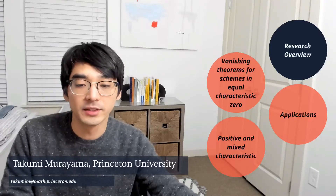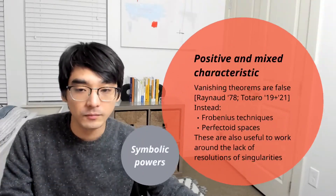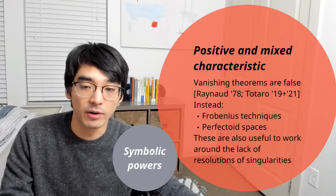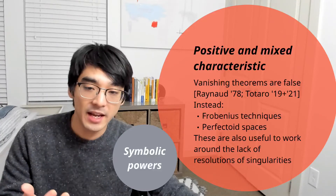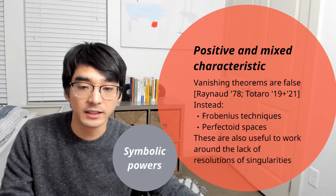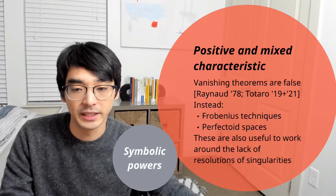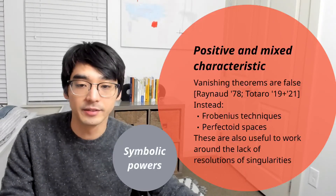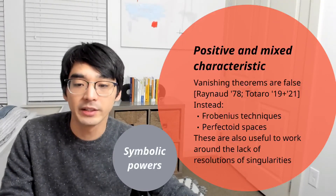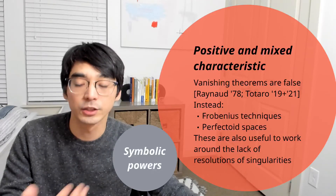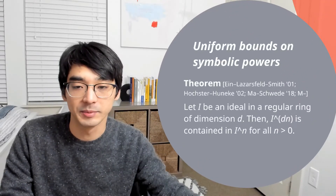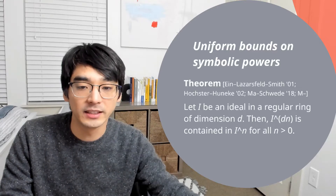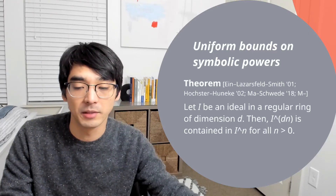What do you do in positive and mixed characteristics? As I said before, we don't have resolutions of singularities necessarily, and vanishing theorems are actually false. Instead, what we've learned is that we should use Frobenius techniques — techniques involving the Frobenius morphism in characteristic p — or perfectoid spaces in mixed characteristics. These get rid of the issue of vanishing theorems, but are also very useful to work around the lack of resolution of singularities because they give us tools to study singularities. This leads to a segue into my main research talk.